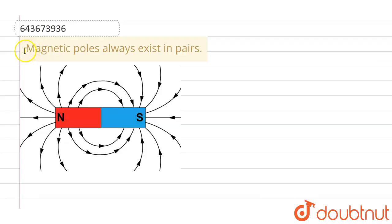Hello everyone. If we talk about this question, this given question is magnetic poles always exist in pairs. So we have to tell if this given statement is a true statement or a false statement. Let me tell you the answer, that this given statement is a true statement.